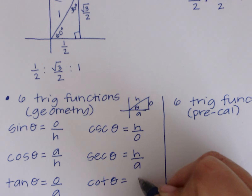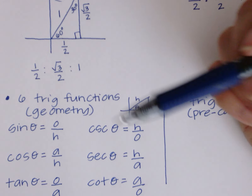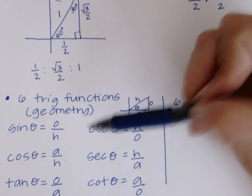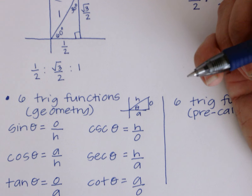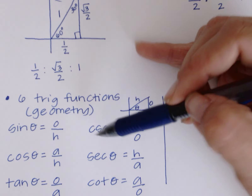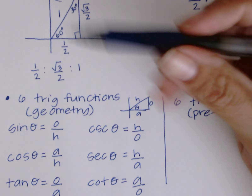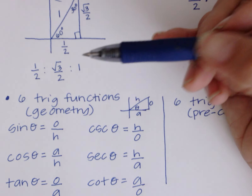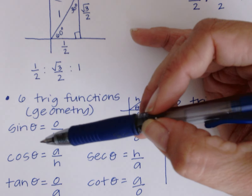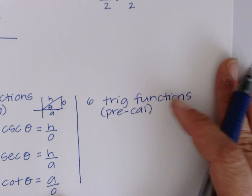Tangent and cotangent are easy to memorize, but sine/cosine with their reciprocals gets trickier. A helpful trick since our school letters are SC: you always have one S and one C in every pairing. Sine pairs with cosecant, cosine pairs with secant — never two S's or two C's together.